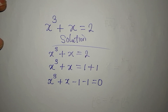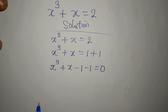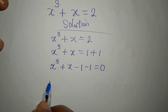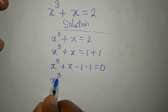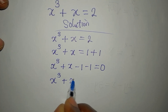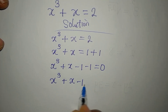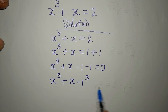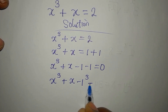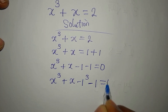Now the target is to rewrite this expression. We write x³ + x as x³ − 1³, then minus 1, so the equation becomes x³ − 1³ − 1 = 0, setting us up for factoring.